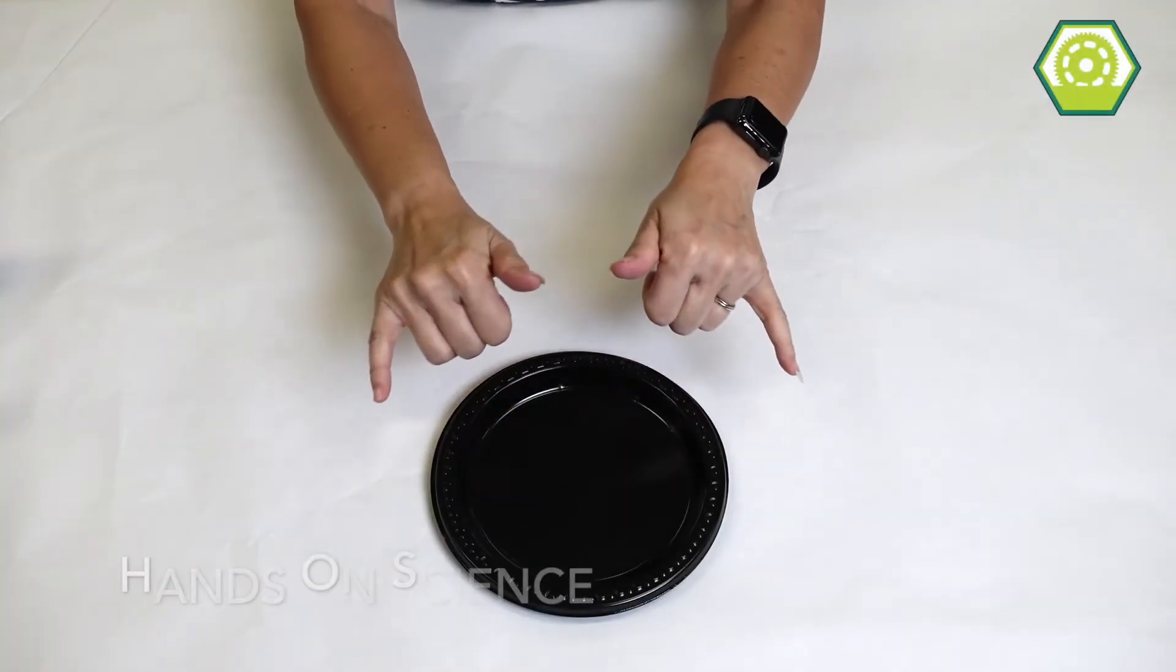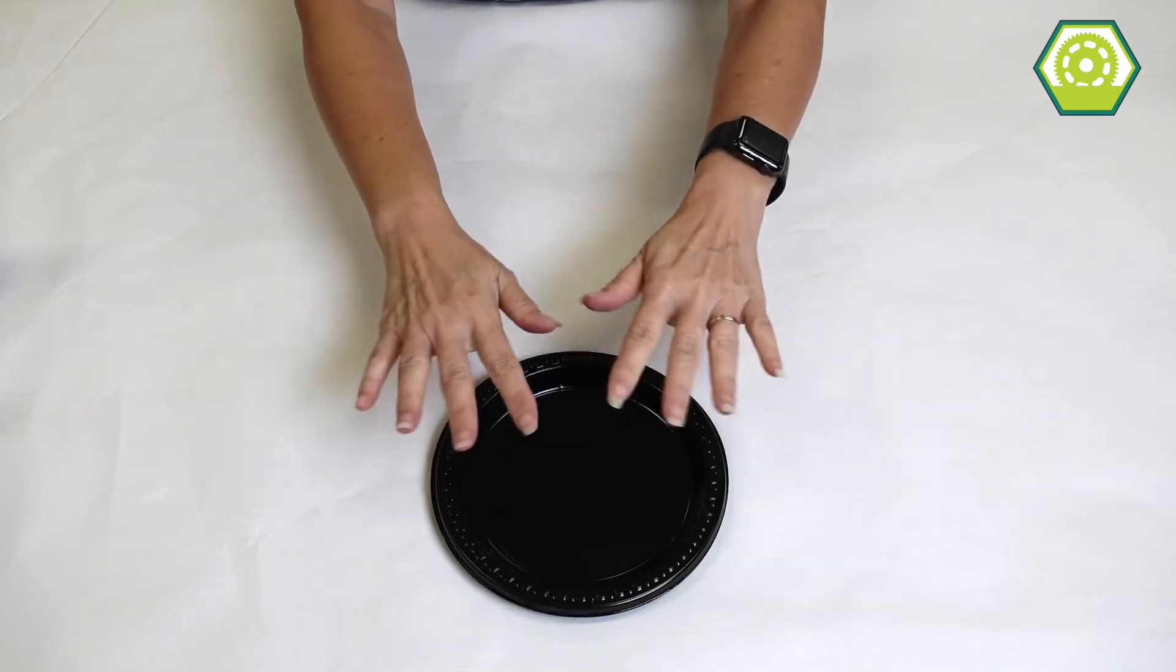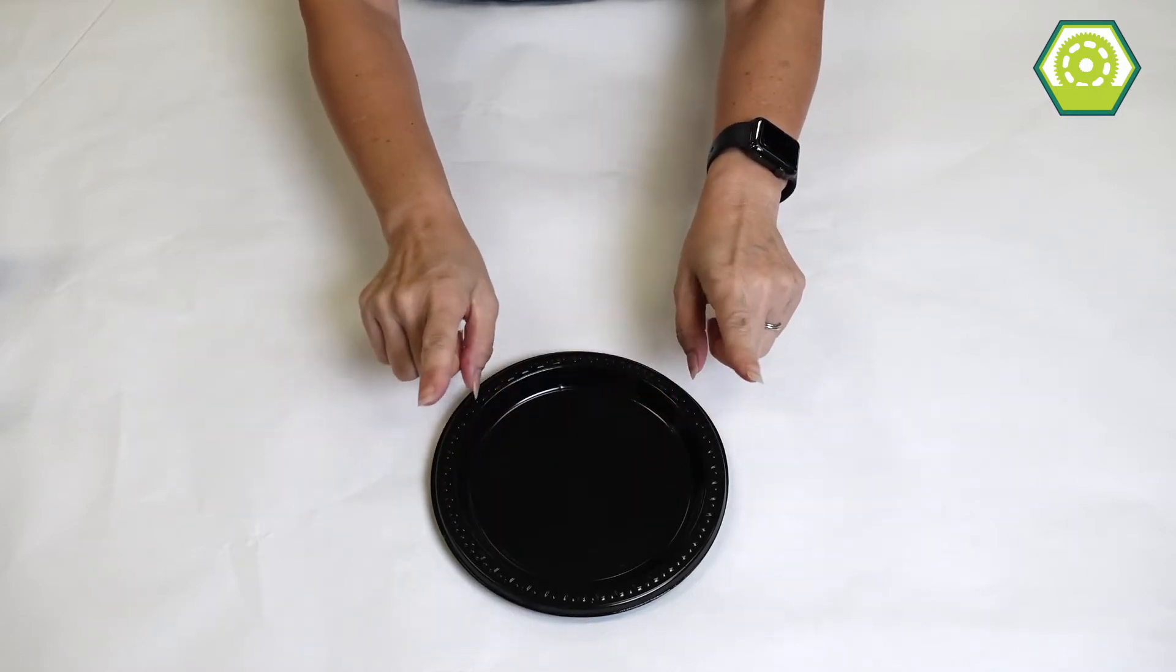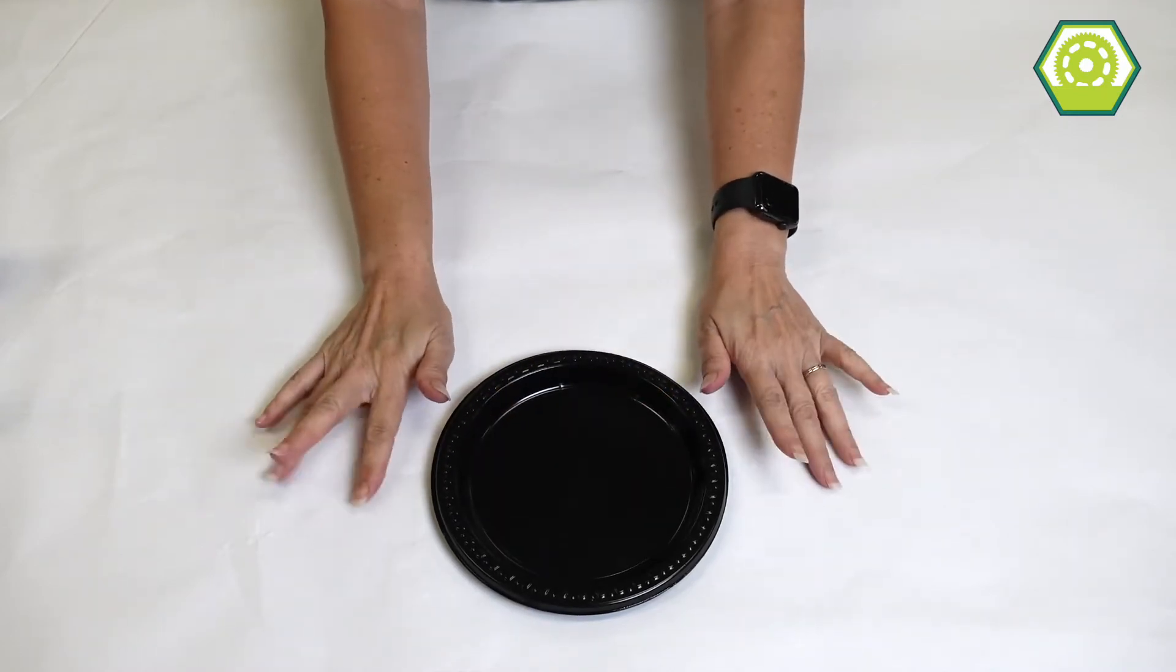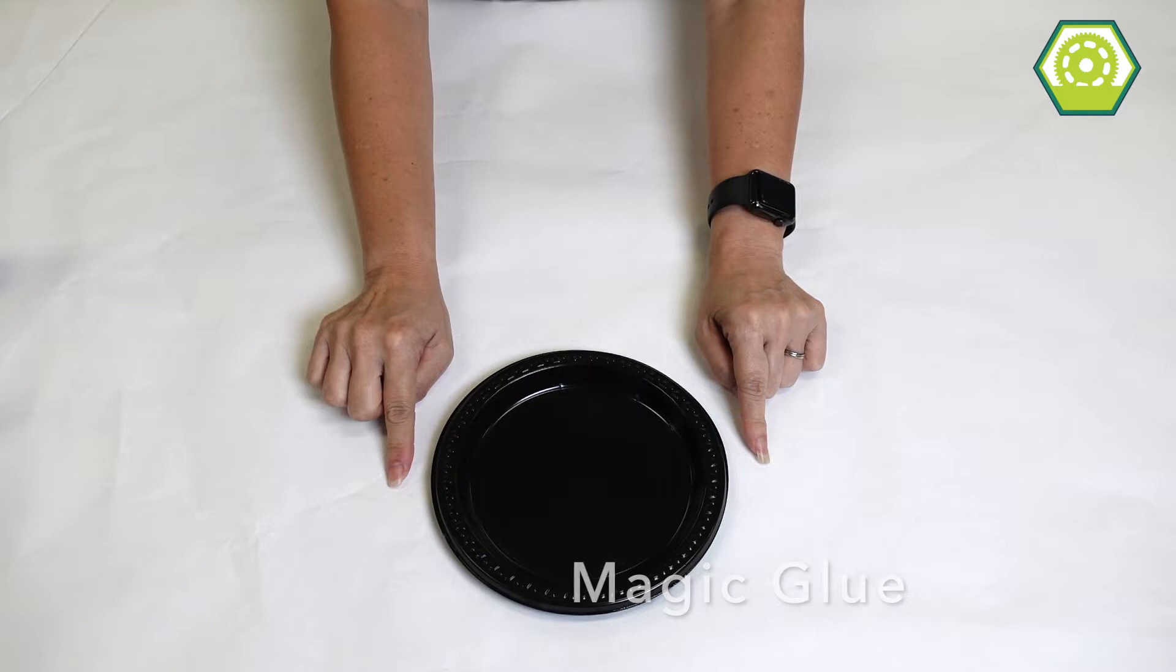Hi everybody and welcome to Hands on Science. It's just me, Mel, here today. All right, so today we are going to make magic using glue and soap and some food coloring.